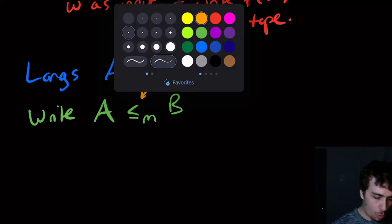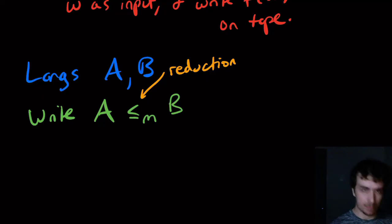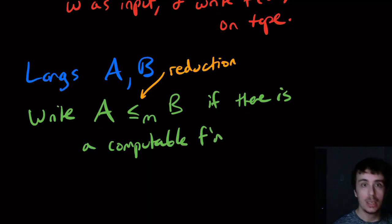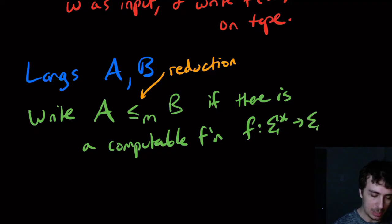So what does it mean to be mapping reducible? If we're going to say that this is true, if there is a computable function—remember the definition of computable function is it can write it out on the tape—so some Turing machine can write it out. Let's call it f, which again goes from Σ* to Σ*. It does not have to just take inputs from A or produce things that are in B.